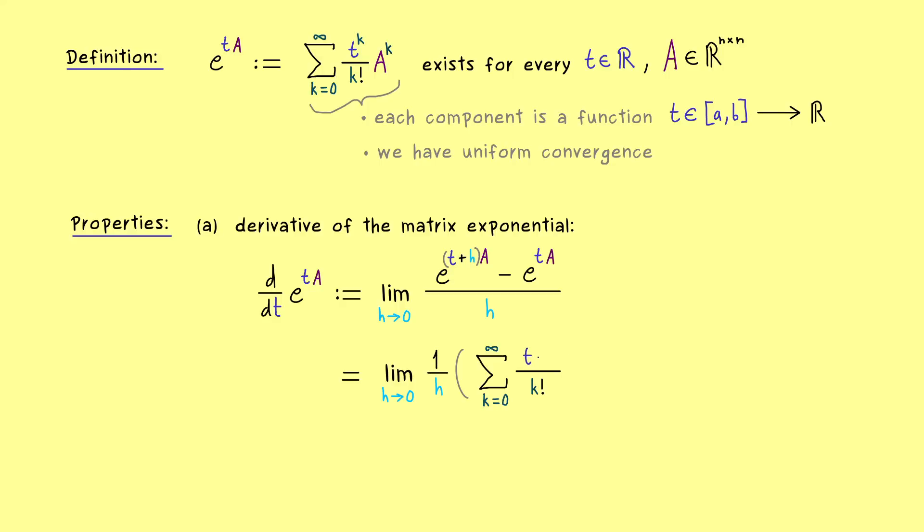And obviously in order to do that we just have to put in the definition of the matrix exponential. In the first part we have (t + h) to the power k times A to the power k. And in the second part we just have the matrix exponential just with t.